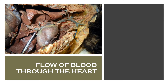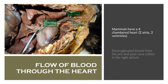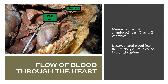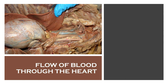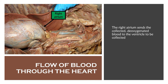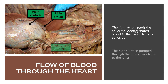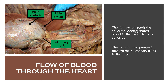We're gonna begin with the flow of blood through the heart. Mammals have a four-chambered heart — two atria and two ventricles. Deoxygenated blood from the pre and post cava are collecting in the right atrium. The right atrium is gonna send that deoxygenated blood to the right ventricle. The blood is then pumped from the ventricle through the pulmonary trunk, which bifurcates into the pulmonary arteries, sending blood to the lungs.